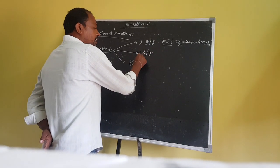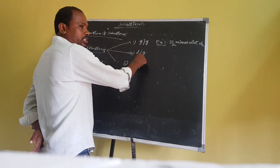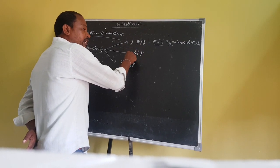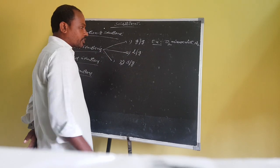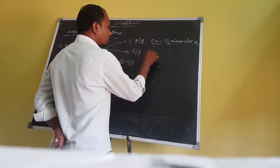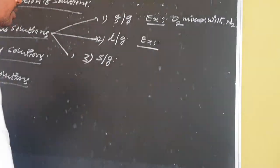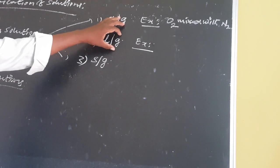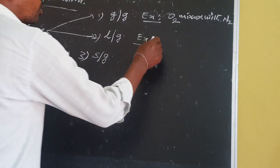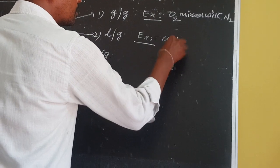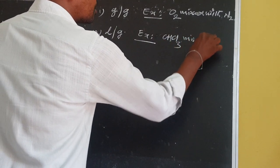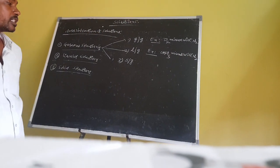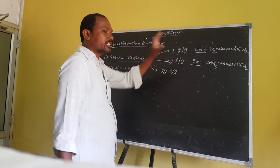Next, liquid-in-gas type solutions: in this type, gas always acts as a solvent and liquid acts as a solute. For example, chloroform mixed with nitrogen. This is an example for liquid-in-gas type solutions.